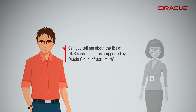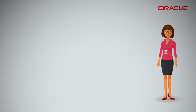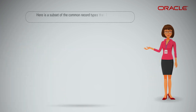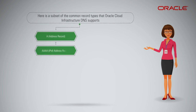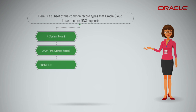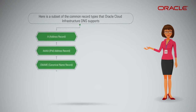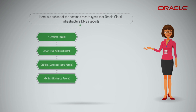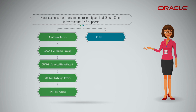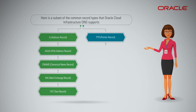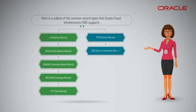Can you tell me about the list of DNS records supported by Oracle Cloud Infrastructure? Here is a subset of the common record types that Oracle Cloud Infrastructure DNS supports: A or Address Record, Quad A or IPv6 Address Record, CNAME or Canonical Name Record, MX or Mail Exchange Record, TXT or Text Record, PTR or Pointer Record, and SOA or Start of Authority Record.